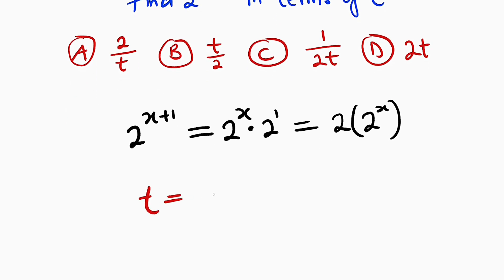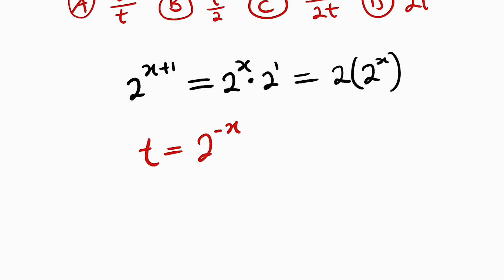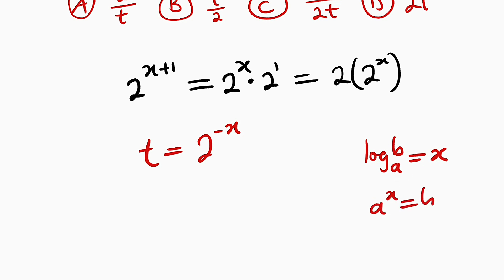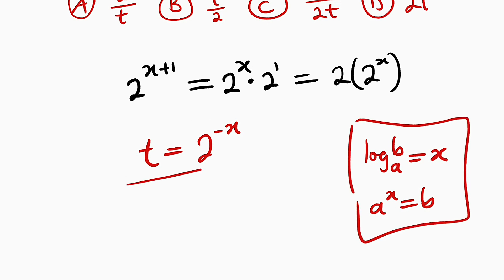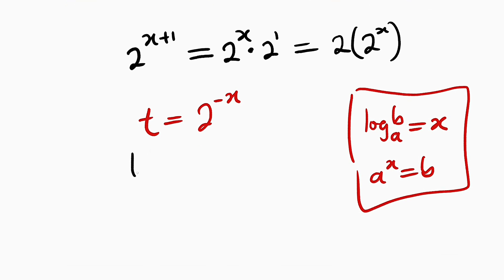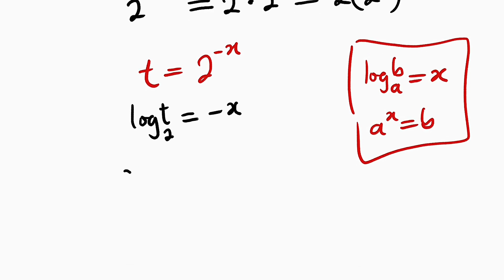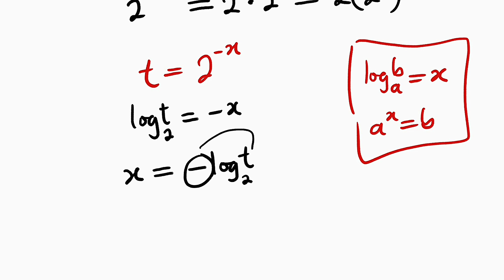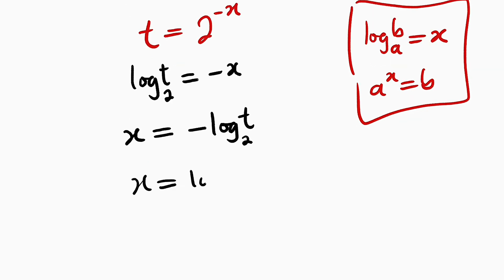So we have t equal to 2 raised to the power of negative x, that is our equation. From the definition of logarithm, remember if you have log b base a equal to x, then a raised to the power of x will be equal to b. So applying this here, you can clearly see that log t base 2 is equal to negative x. I want to make x the subject, so I can divide both sides by negative 1. So x will be equal to negative log t base 2. From one of the laws of logarithm, this negative 1 can serve as a power of t.